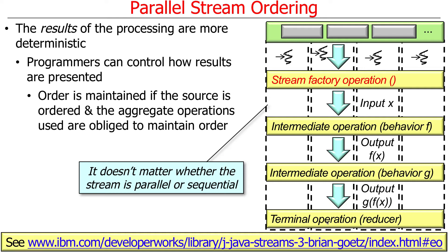The presentation order is maintained if the source is ordered and if the aggregate operations used in the stream are obliged to maintain order. If those two things are true, then order is maintained. This applies whether the stream is parallel or sequential. In some cases that's actually a problem, because there's overhead incurred by forcing ordering on a parallel stream — it has to rearrange things or make sure they show up in the right order at the end.